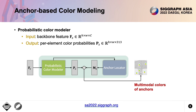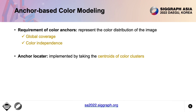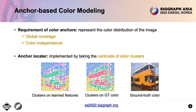What do we do in the anchor locator? The color anchors are required to represent the color distribution of the whole image, so the anchors should be located to achieve global coverage. We further encourage the anchors to be color-independent so that we can sample their colors individually. We propose to locate these anchors by taking the centers of color clusters. The features of the color model are used for clustering, which is believed to be color-related. This example evidences the clustering similarity of the learned features and the ground-truth color, with stars marking the located color anchors.